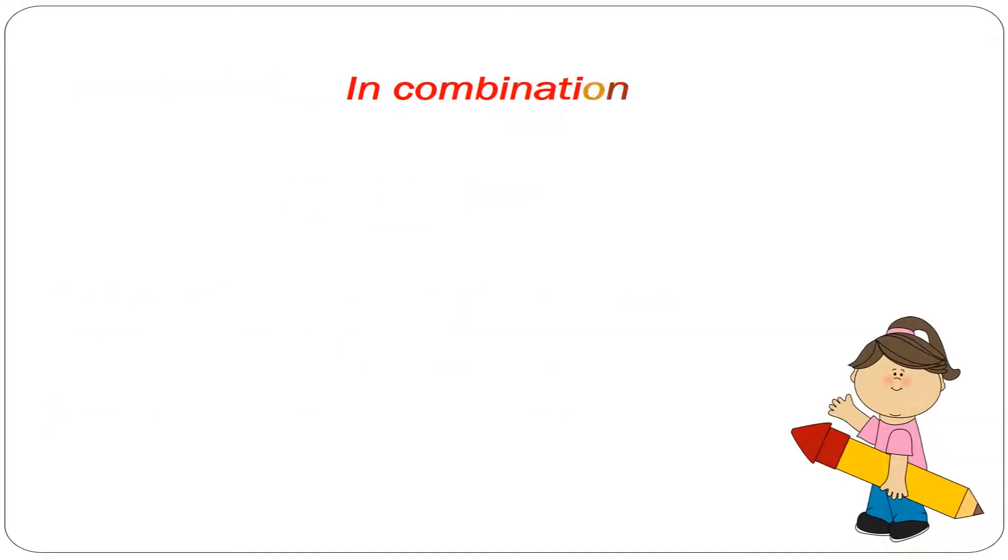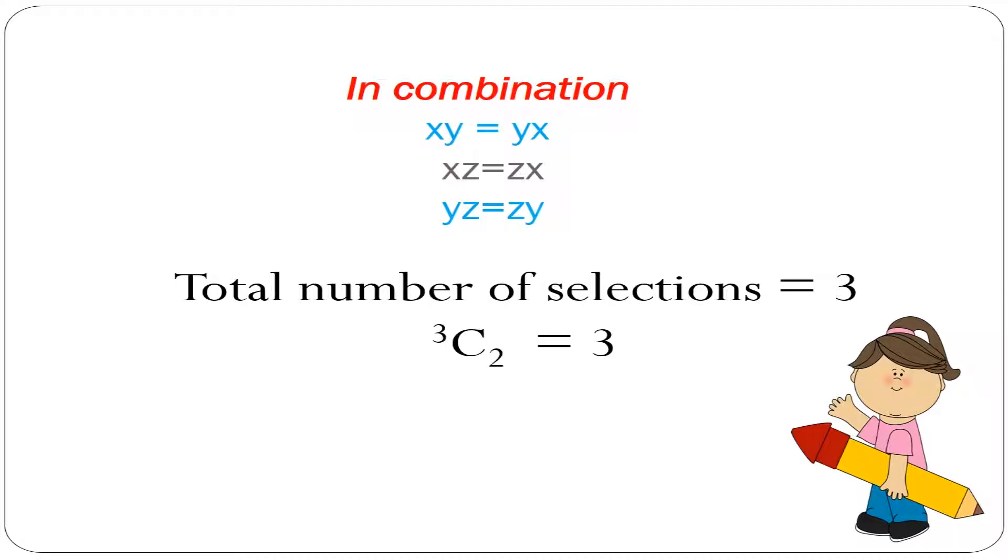Now in combinations these are only three as here xy is equal to yx, xz is equal to zx, yz is equal to zy. Total number of selections is equal to three. That is number of combinations of three items taken two at a time is 3C2 which is equal to three.